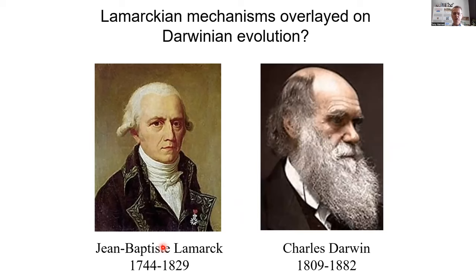This gets back to Jean-Baptiste Lamarck and his theory of Lamarckian evolution. Darwinian evolution is the most demonstrated theory in the history of science — no one's questioning that. But could we overlay Lamarckian elements onto Darwinian evolution? Lamarck shouldn't have been dismissed out of hand, because there appear to be Lamarckian components overlaid on Darwinian evolution that we really need to understand.